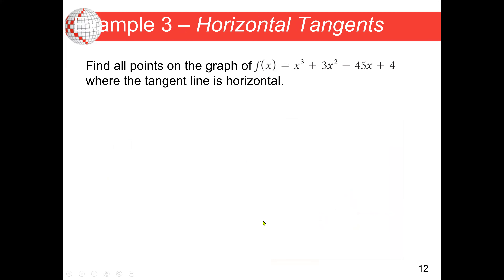The key concept here is that when we are looking for a slope and we have a function, we can find the derivative if it's a polynomial function. For a linear function, we can find the slope directly. Here we are using the tangent line on a nonlinear function. The next question asks us to find all points on the graph of f(x) equals x cubed plus 3x squared minus 45x plus 4 where the tangent line is horizontal. Remember, when a line is horizontal, the slope is zero; when vertical, the slope is undefined.